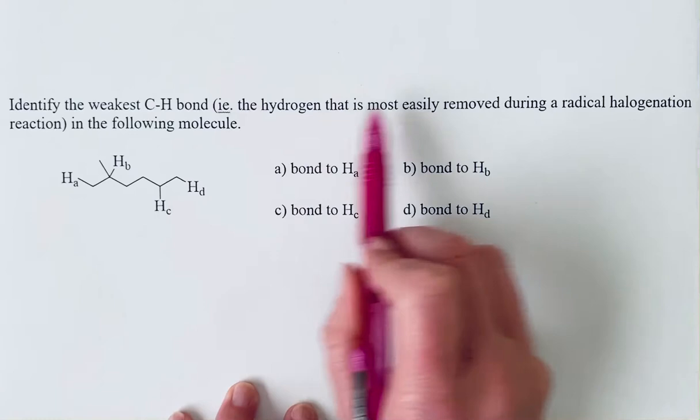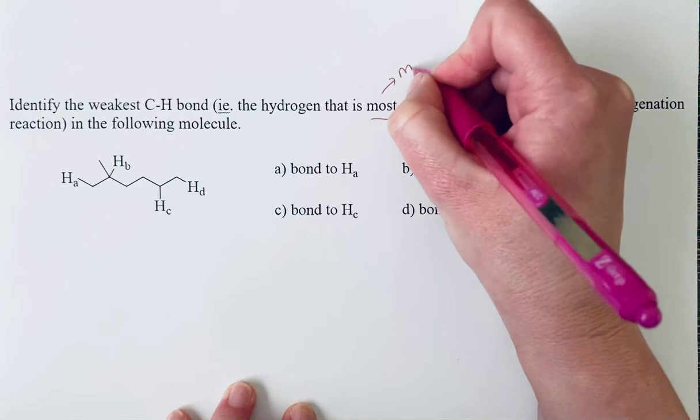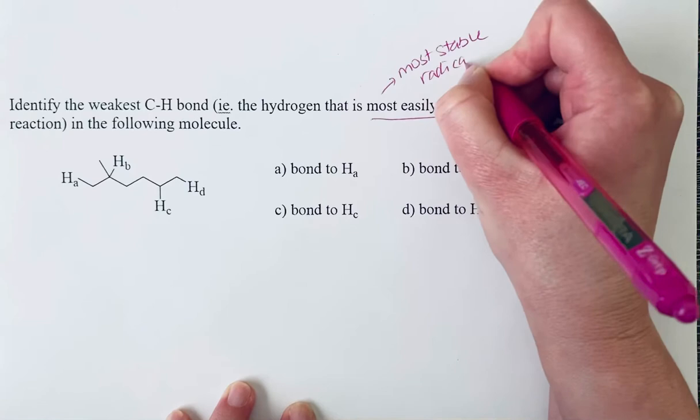So the hydrogen that is most easily removed will be the one that forms the most stable radical intermediate.